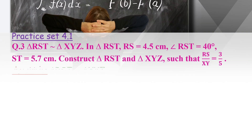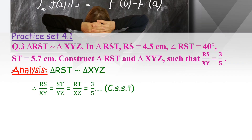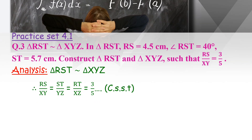Since triangle RST is similar to triangle XYZ, the ratio of their sides will be equal: RS upon XY equals ST upon YZ equals RT upon XZ. The value of one ratio is given as 3 upon 5, so all the ratios will be equal to 3 upon 5. Now we are going to substitute the values of the known sides.